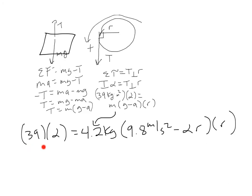So then 39 kilogram meter squared times alpha equals 4.2 kilograms, that was the mass that they gave us. There's 9.8 minus a, and a is alpha r for a rotating pulley, times the lever arm, which also happens to be r.